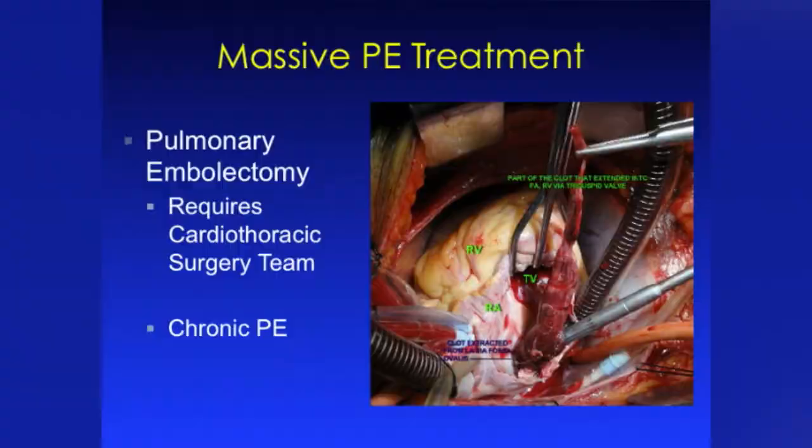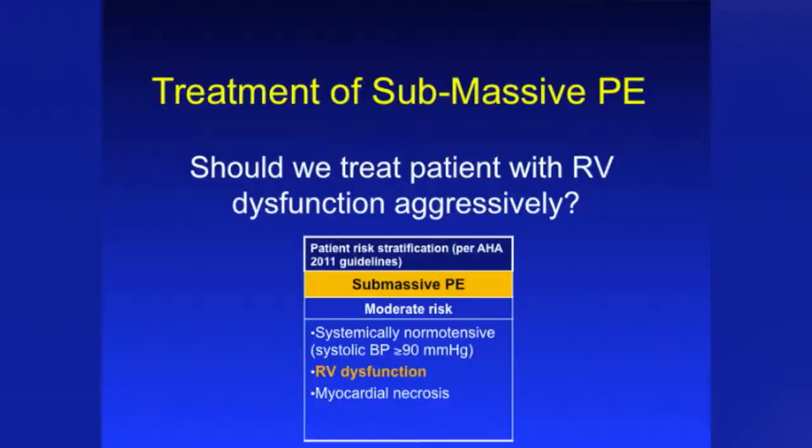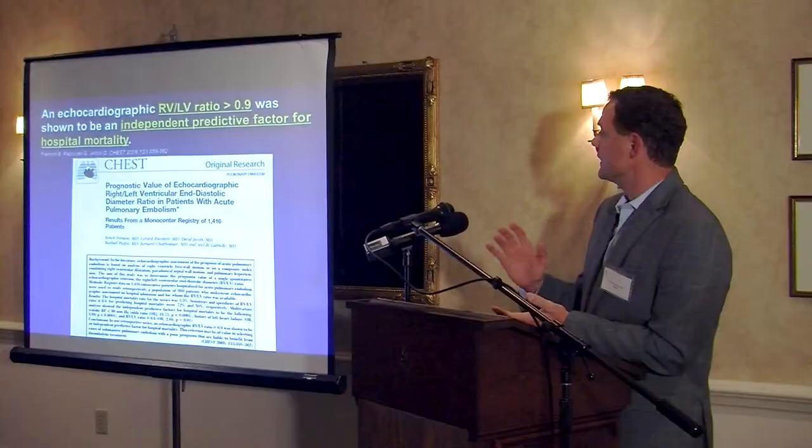Sub-massive PE is much more common. One thing that distinguishes sub-massive PE from minor PE is right heart strain. The key question is: should we treat these patients aggressively with thrombolytics versus just IV heparin? Several studies have looked at the long-term effects of right heart strain, characterized by a right ventricular to left ventricular diameter ratio greater than 0.9.